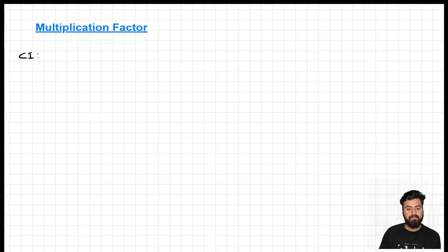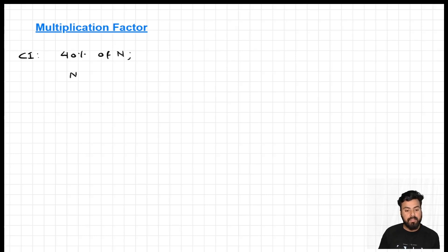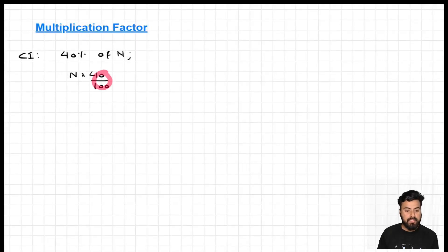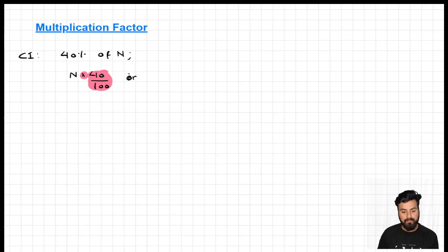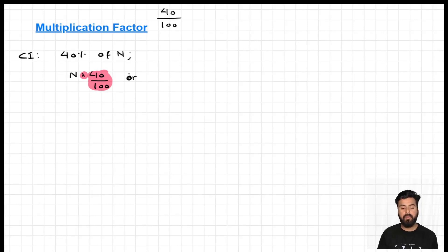In Case 1, let's find 40 percent of a number. If I want to find 40 percent of a number, I multiply the number by 40 by 100. So the multiplication factor here is 40 by 100 — the factor by which we multiplied is called the multiplication factor. This same multiplication factor can also be represented in decimal form.